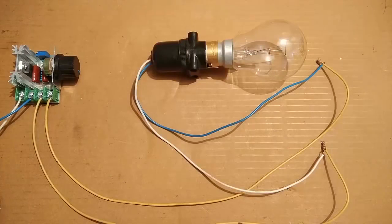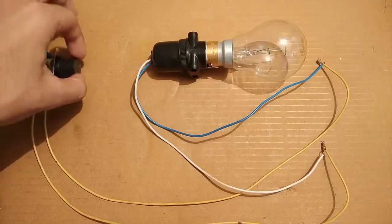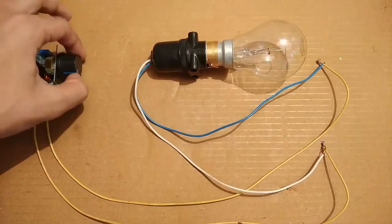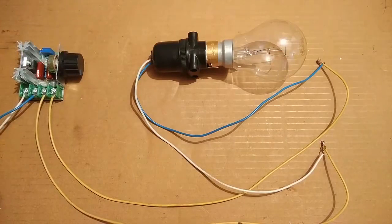Now I am going to perform the dimmer testing. I have connected a 100 watt incandescent bulb, and I am going to bring the knob back to the originating position so that we can start from the beginning.